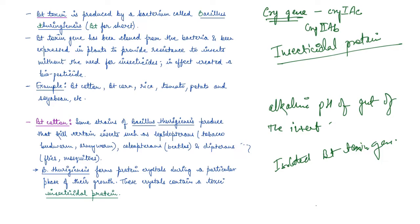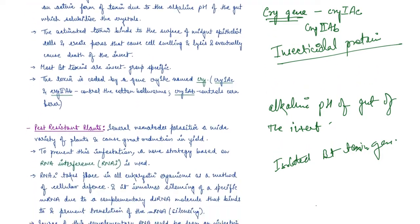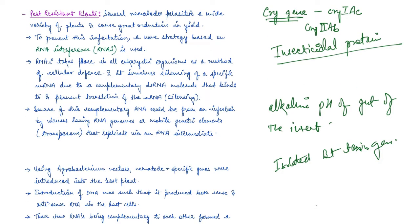Now let's talk about pest-resistant plants from another angle. There are several nematode parasites, and a wide variety of plants and animals have these parasites inside them. For example, there is a nematode known as Meloidogyne incognita which infects the roots of tobacco plants and causes a great reduction in yield.